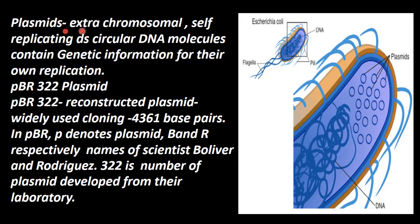Now we will talk about the first type: Plasmids. What do we know about plasmids in bacteria? These are extra chromosomal DNA. This DNA is present in bacteria alongside other plasmids, but they are not essential for bacterial life.